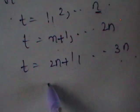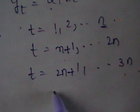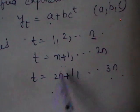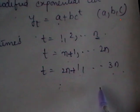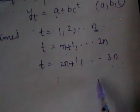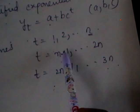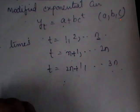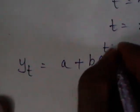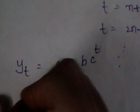Each of the three parts has length n. So we have divided the entire data into three equal parts: 1 to n, n+1 to 2n, and 2n+1 to 3n. After dividing, we calculate expressions for A, B, and C. These are partial sums — we are going to calculate the sums over each part. The curve given is Yt = A + BC^t.